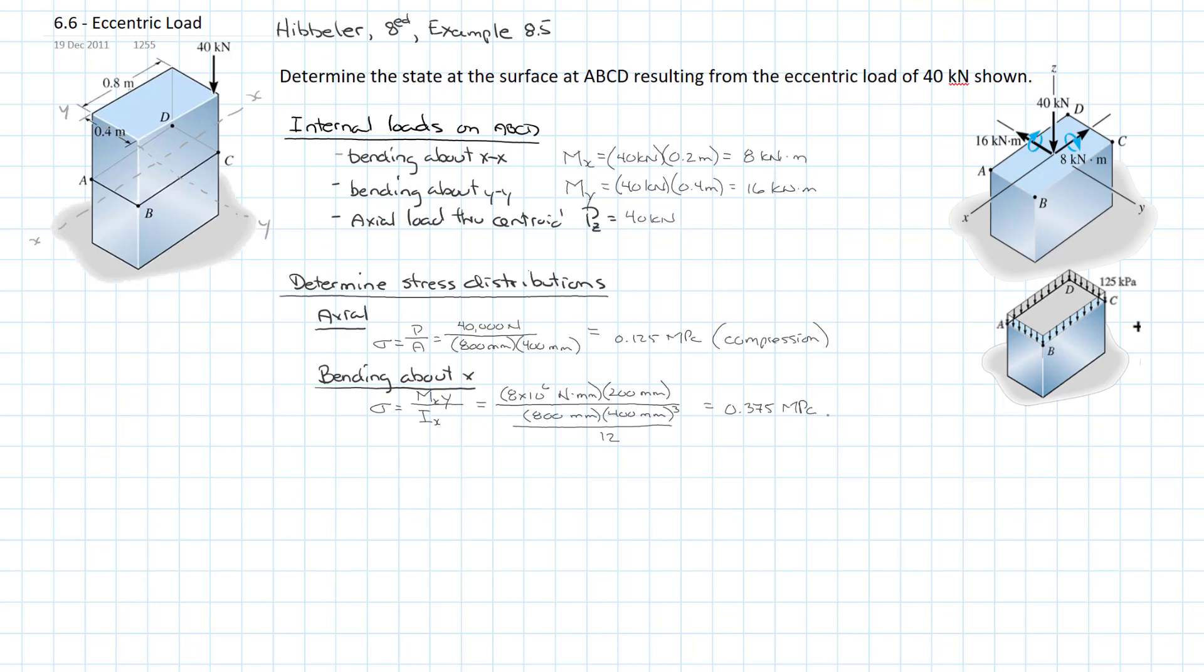And that would be, using my right-hand rule, compression along BC. And so we can draw that in. And once again, I'm going to save myself a whole lot of drawing pain and just copy and paste in the diagram from the textbook. And there we have it. We can see our compression along BC, our tension along AD, zero at the neutral axis. And so that would be the stress distribution as a result of that bending moment of 8 kilonewton-meters along the x-axis.